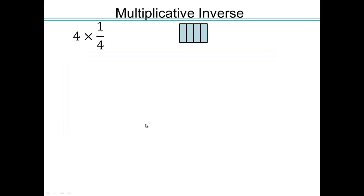Let's take a look at multiplicative inverse. Just like we had two numbers adding together giving the additive identity, we have additive inverses. So two numbers or objects multiplying together giving the multiplicative identity will be multiplicative inverses.